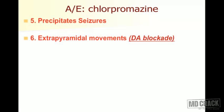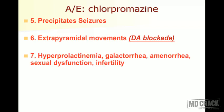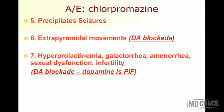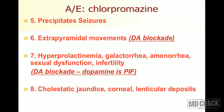The next important adverse effect is dopaminergic blockade leading to extrapyramidal reactions, involuntary movements, and drug-induced parkinsonism. Because dopamine itself is the prolactin inhibitory factor (PIF), blocking dopamine is like inhibiting PIF - inhibition of inhibition leads to increased prolactin. So there is hyperprolactinemia, galactorrhea, amenorrhea, sexual dysfunction, and infertility. All this is due to dopaminergic blockade.